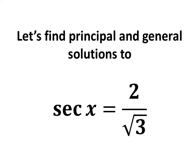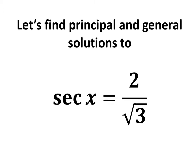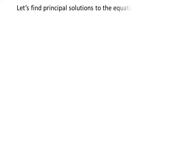In this video, we will learn to find the principal solutions and general solutions to the equation secant of x is equal to 2 upon square root of 3.